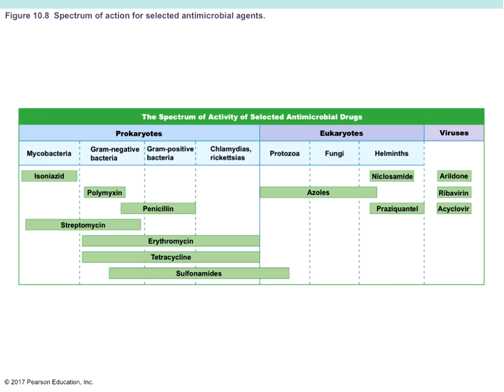Here is the spectrum of activity of various antimicrobial drugs. Erythromycin is effective from gram-negative bacteria all the way through rickettsiae. Tetracycline is similar. Streptomycins are most effective against mycobacterium and gram-negative bacteria. Polymyxins are very narrow spectrum. Just look at this list and absorb the relative ranges.